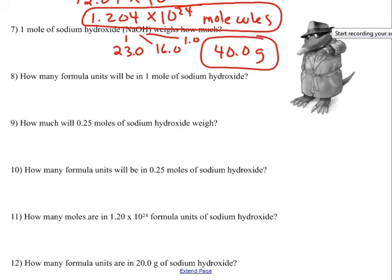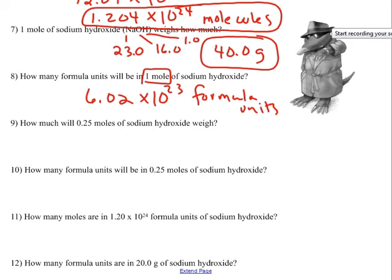How many formula units will there be in one mole of sodium hydroxide? One mole will have 6.02 times 10 to the 23 formula units. It's called a formula unit because NaOH is an ionic compound, and the smallest particle of an ionic compound is a formula unit.